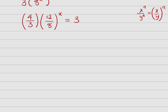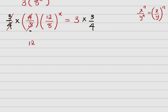Now I want to get rid of the 4 over 3 so I can isolate x. I multiply both sides by the inverse, which is 3 over 4. The 4 over 3 and 3 over 4 cancel each other, so I'm left with 12 over 8, all raised to power x on the left side.